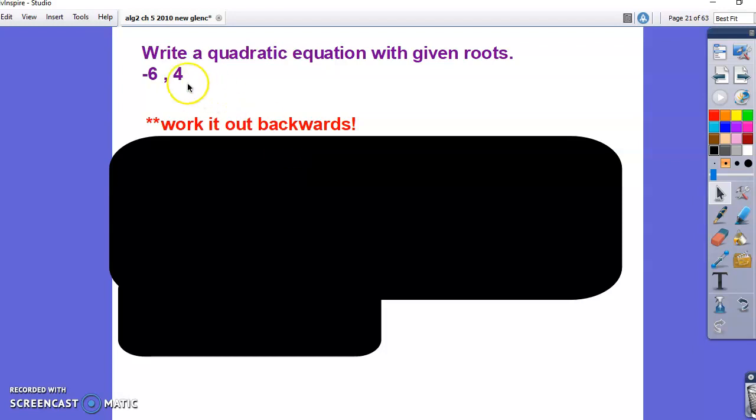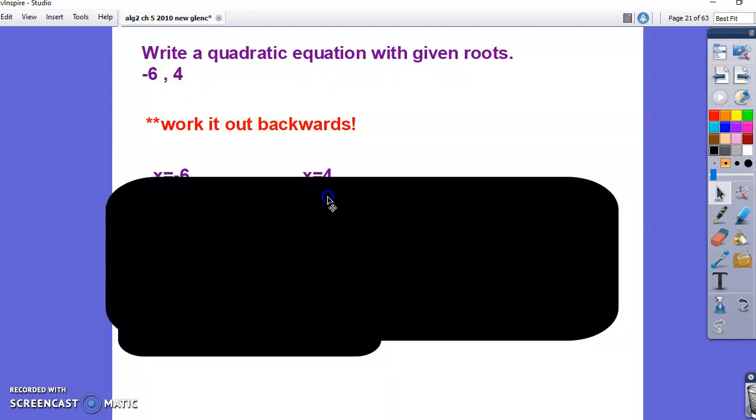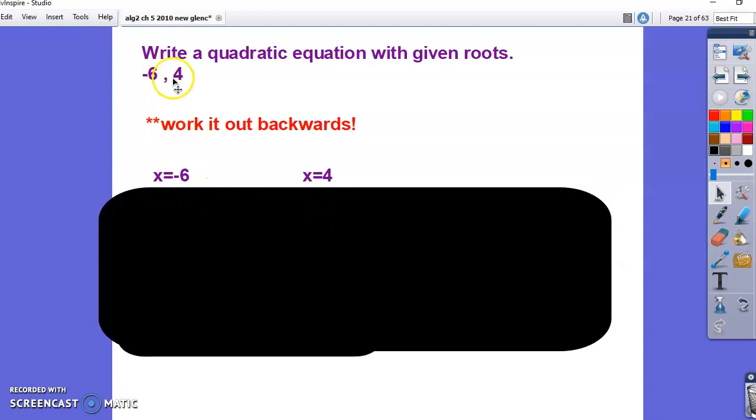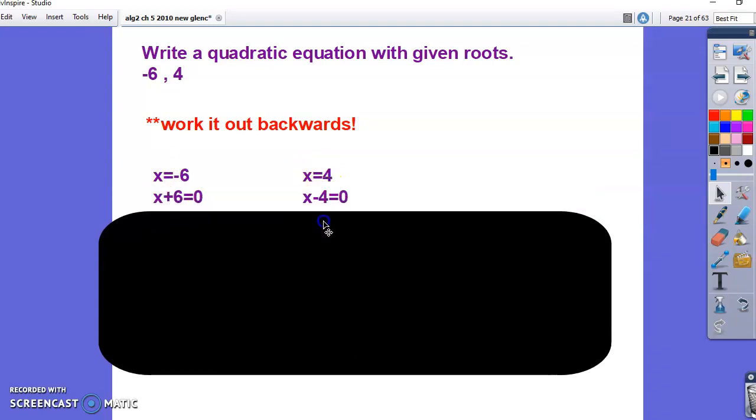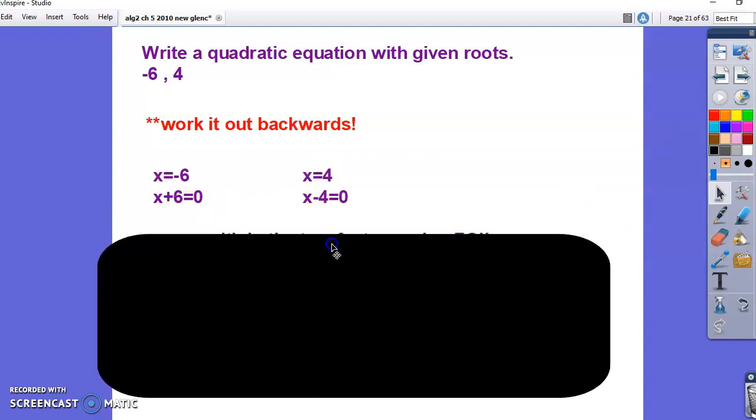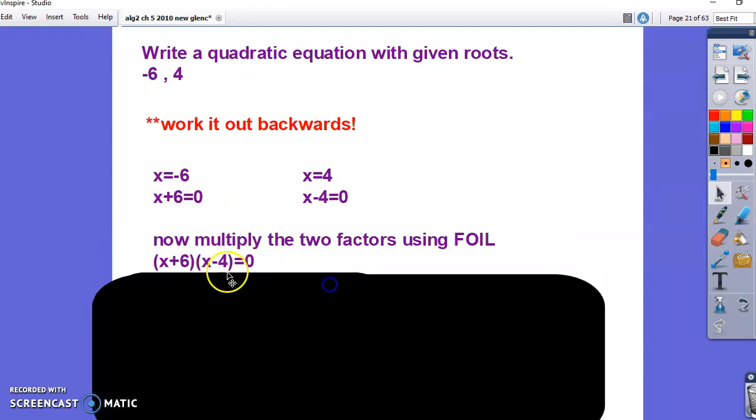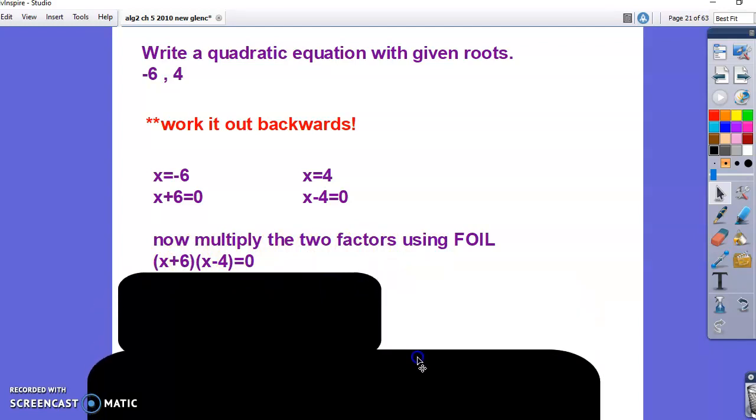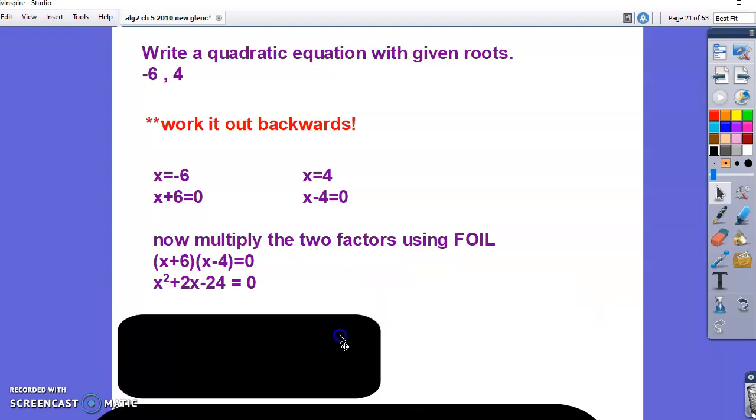This is going to be a little strange. But what you're going to do is take both of these and just go backwards the way you would have come up with them. The first thing I want you to do is just say x equals negative 6 and x equals 4, because that's how your answers would have looked when you solved them. Then you want to get both of these set equal to zero. So to get this one back over, you've got to add 6. And to get this one back over, you've got to subtract the 4. Now you're going to take both of these answers back together and write it down like this: (x + 6)(x - 4). Then you're going to multiply the two factors using FOIL: first, outer, inner, and last.